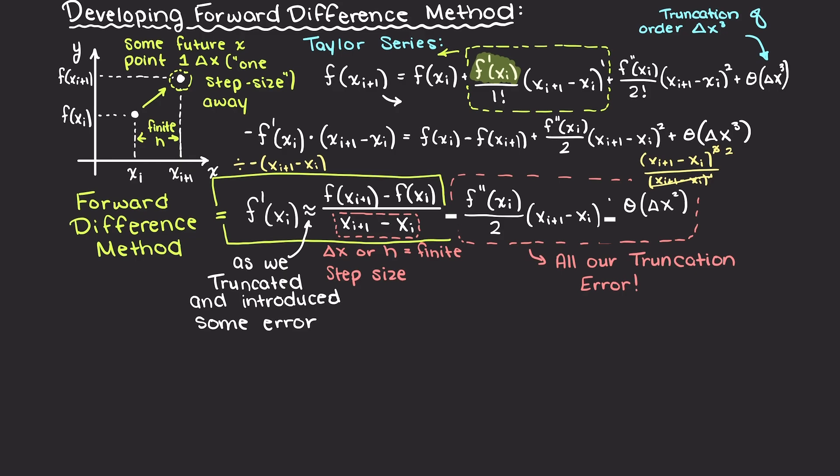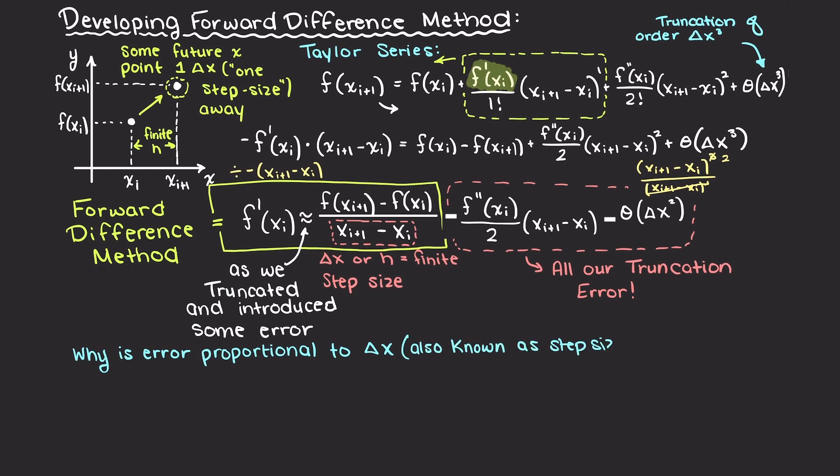In terms of the error, the larger the difference in our step term, the more error our linear approximation of the derivative will give us, as we truncated all higher order terms. Therefore, with the forward difference method, we say that it has an error proportional to our step size. All subsequent or higher order terms are going to have less and less of an influence on our error as you can see here.